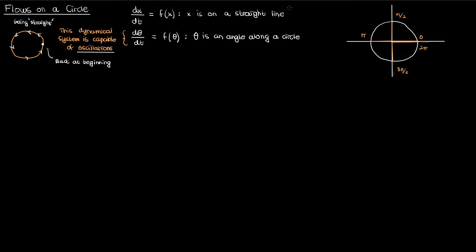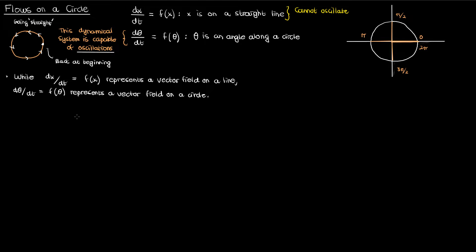This is in contrast to autonomous differential equations like dx/dt = f(x), where x is a variable on a straight line. I proved in a previous video that these systems are not capable of oscillating. With the exception of this oscillation, the dynamical systems dx/dt and dθ/dt are very similar — dx/dt can be thought of as a vector field on a line, and in the same manner dθ/dt can be thought of as a vector field on a circle.